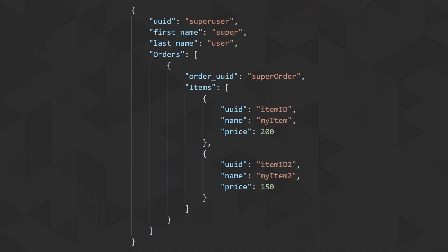Earlier we discussed how we would store information for our online store in a relational database, and now we're going to look at what that structure would look like in a non-relational database. As you can see here, we're using a document-type example. This is a JSON-structure document, and you can see that we can store not just information about the user, but also our orders and order products all in this one document.